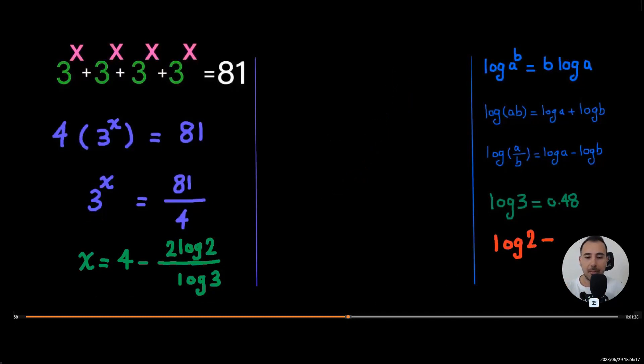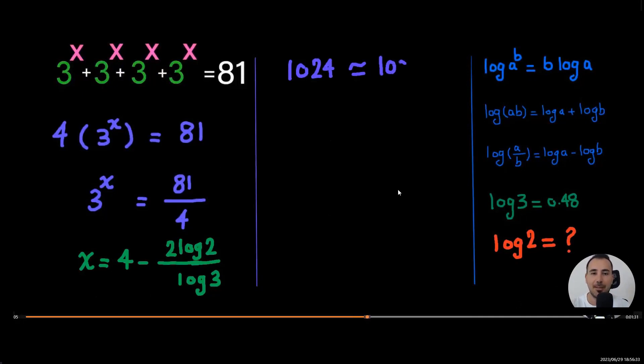Now, as I promised, we're going to have a decimal value for our solution. We have log 3. We don't have log 2. But with this trick, we could find an approximation for log 2. 1024 is equal to 2 to the 10th power.